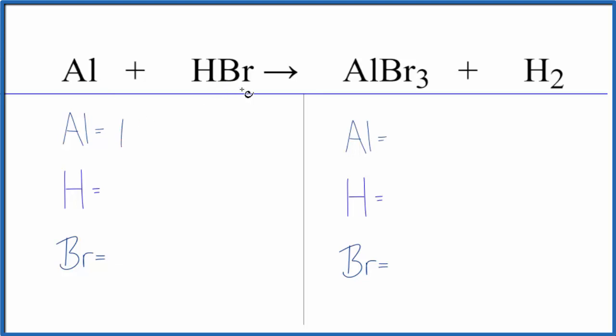One aluminum, one hydrogen, and one bromine atom for the reactants. For the products, we have one aluminum, two hydrogen atoms, and then three bromine atoms.